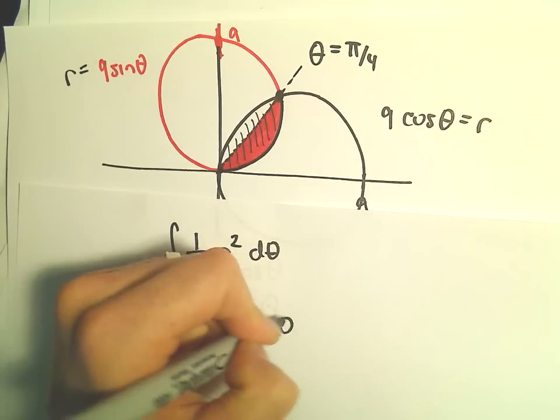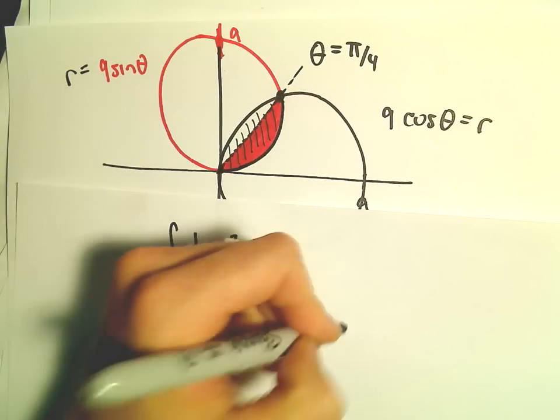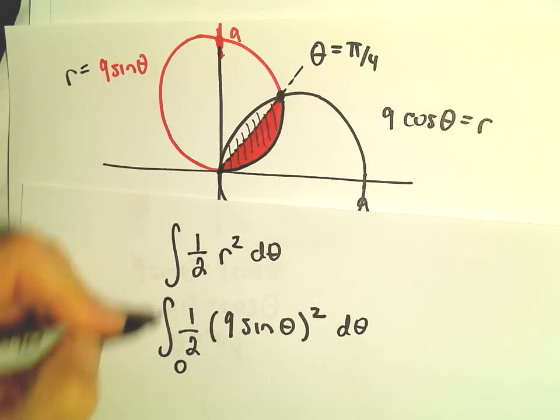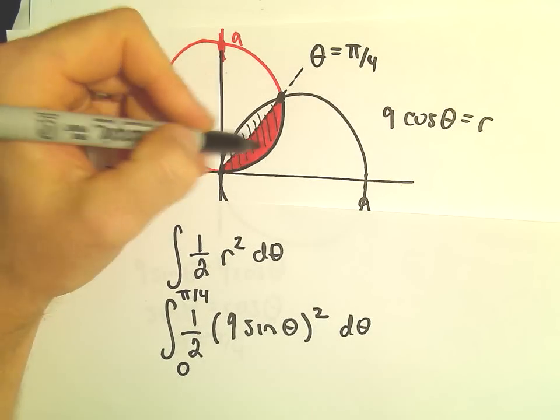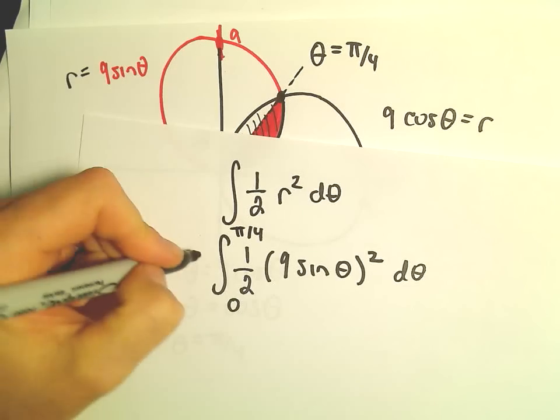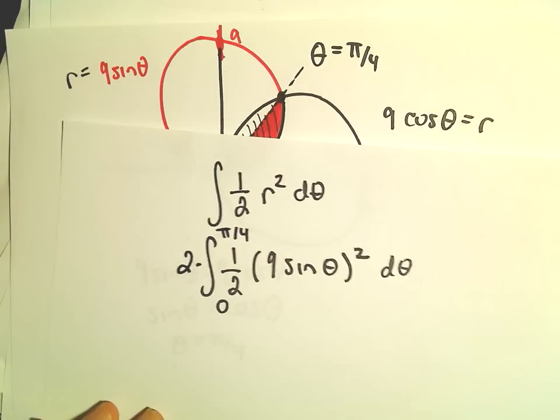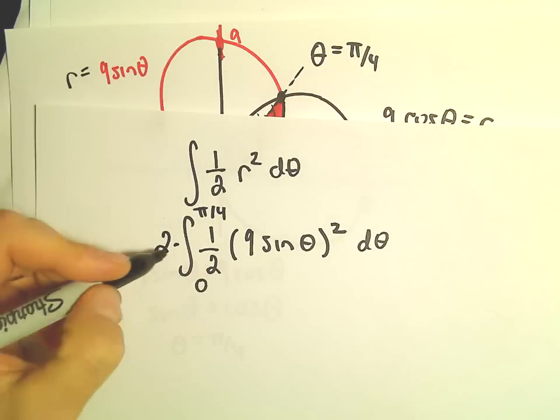I'm going to use 9 sine theta quantity squared. I'm going to integrate from 0 up to pi over 4. And then since I'm only computing half of it, I'm going to have to double that.